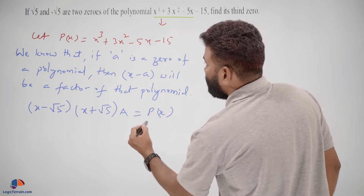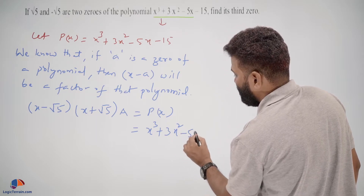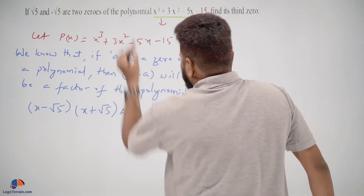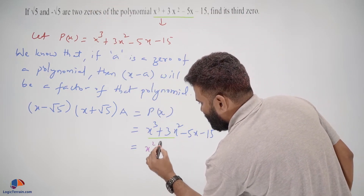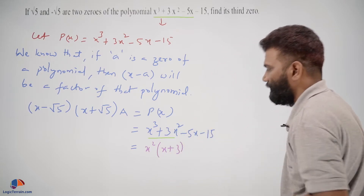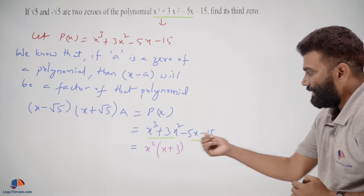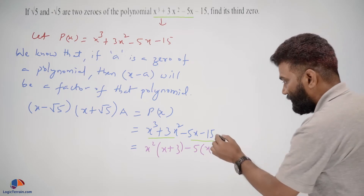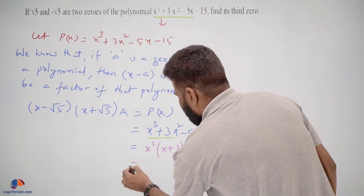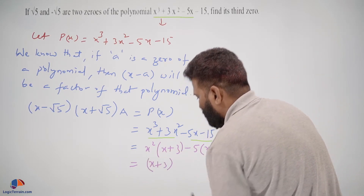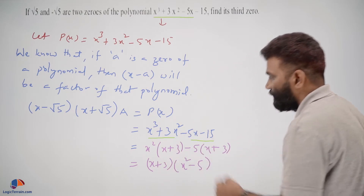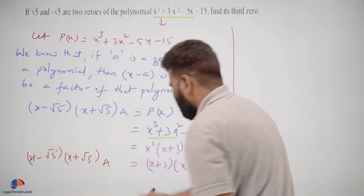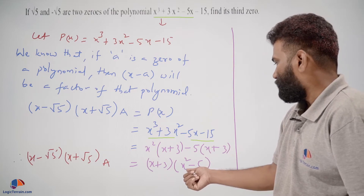That is: (x minus square root 5)(x plus square root 5)(a) equals x cubed plus 3x squared minus 5x minus 15. We can rewrite the right side by taking x squared common from the first two terms, leaving x plus 3, then taking minus 5 common from the last two terms, also leaving x plus 3. So x plus 3 is common, giving us (x plus 3)(x squared minus 5).